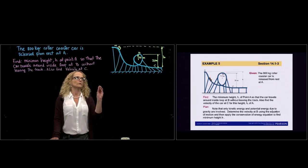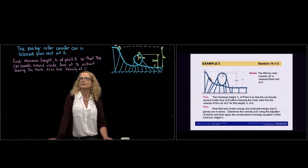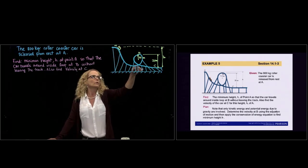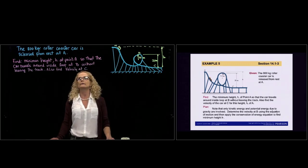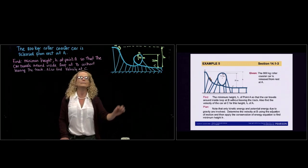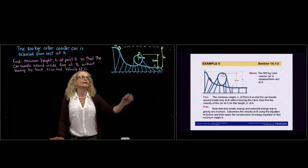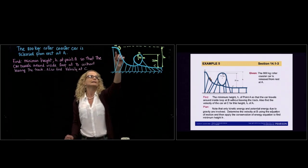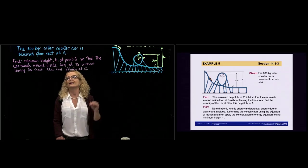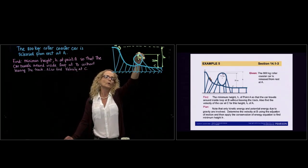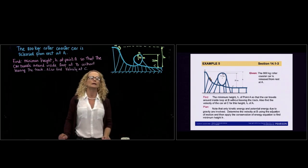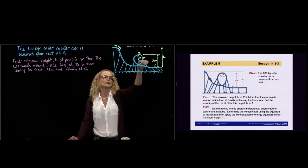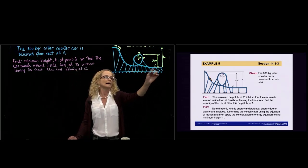So we have here a roller coaster. We have an 800 kilogram roller coaster car that is released from rest from point A, and it travels all along this track. They want us to find the minimum height h at point A, so from where I will release the car, so that the car travels around and inside that loop without leaving the track. So we don't want that whenever we get here the car falls. We want to find that minimum height so that we have enough energy to get here and pass that point. And then we want to find also the velocity at C.